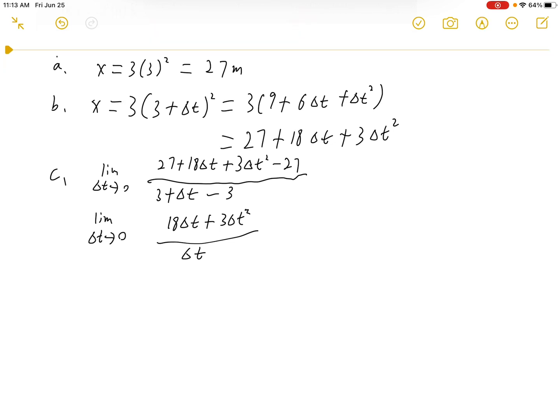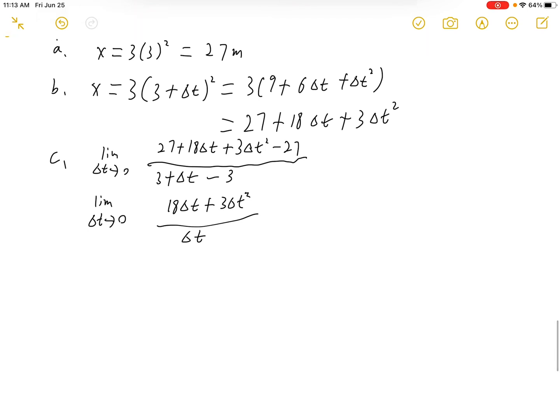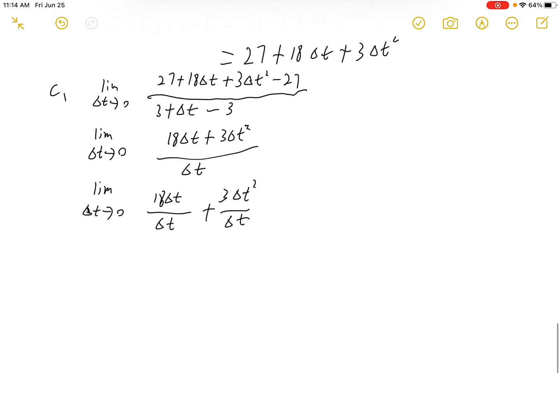So because Δt is approaching zero, the 3Δt squared is approaching zero. So we have 18Δt over Δt plus 3Δt squared over Δt. And by canceling out...